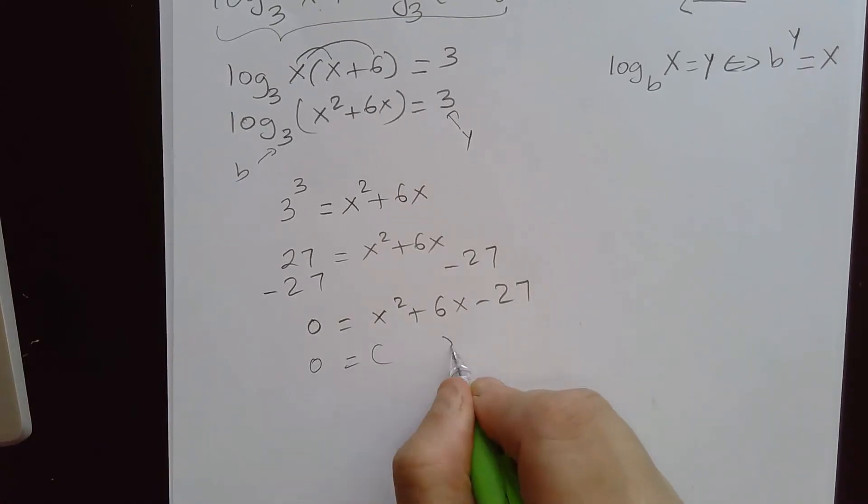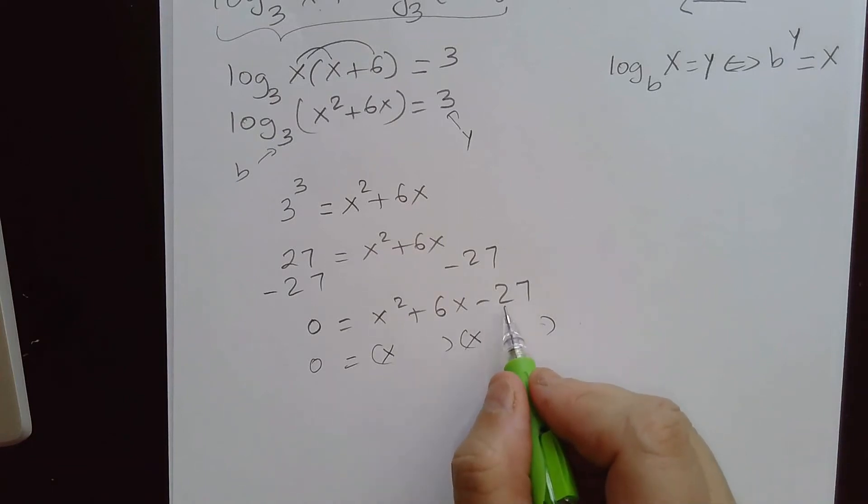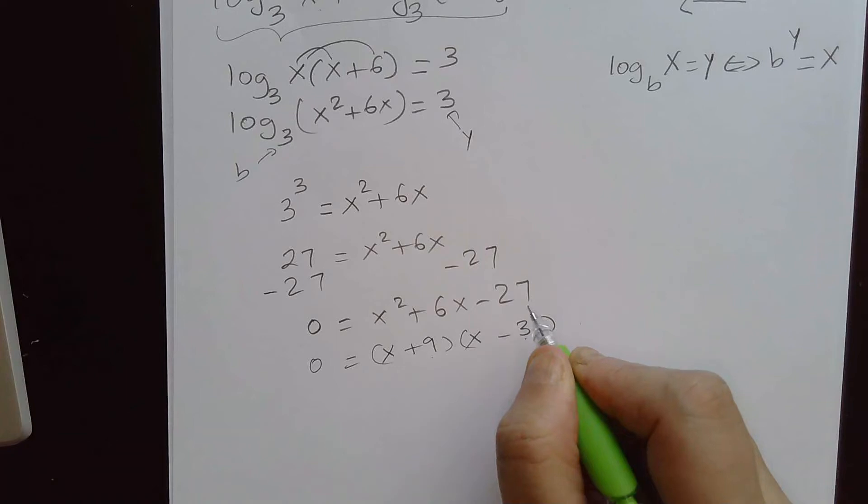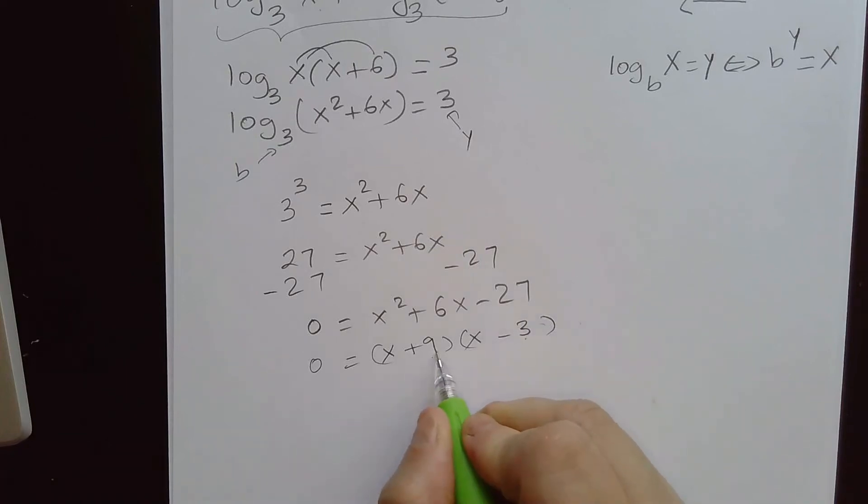Now let's go ahead and try to factor this. We have x squared, that means we have x here and x here. We have the product of two numbers must be negative 27 and their sum must be positive 6. So that must be plus 9 minus 3, because 9 times negative 3 is negative 27. 9 minus 3 gives me 6, which is the coefficient of the middle term.